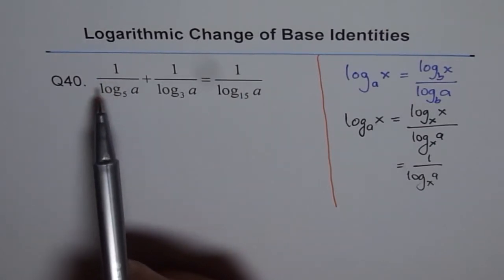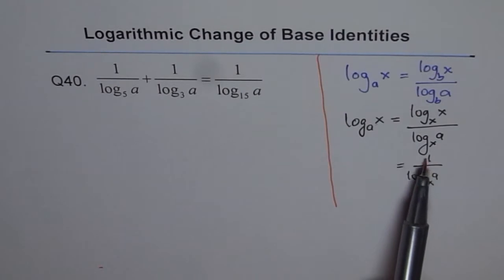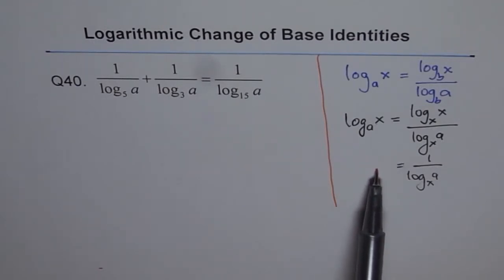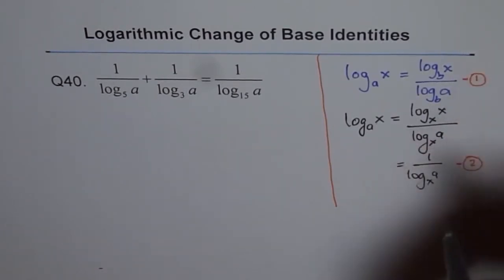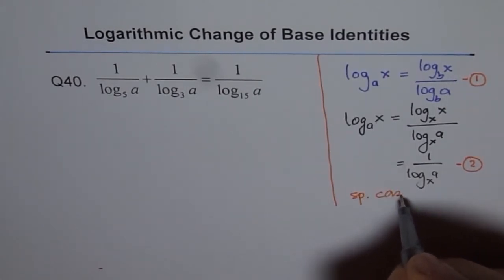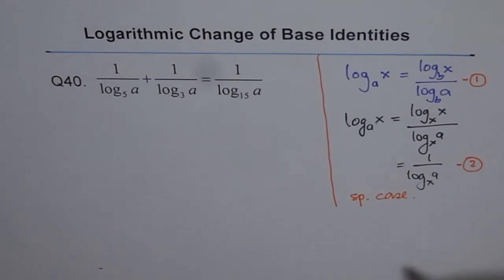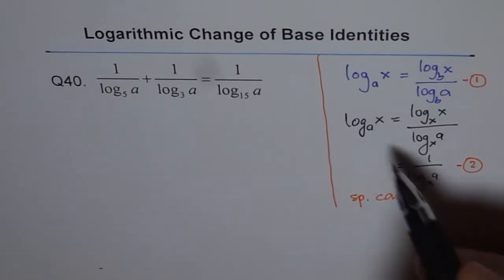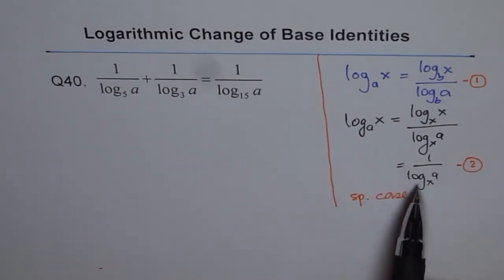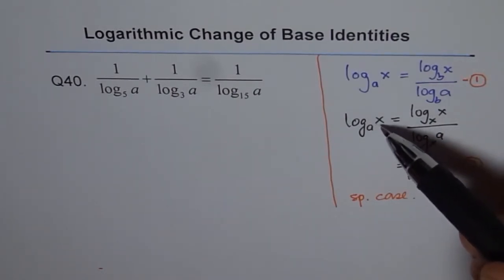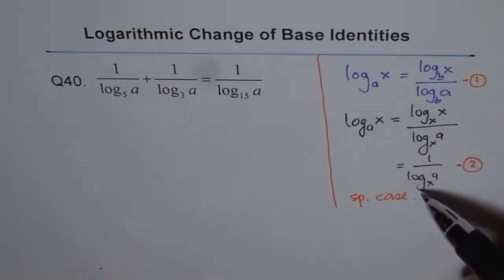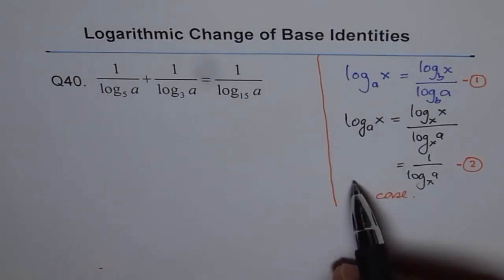Now we have a question with 1 over log_5(a). This could be written as log_a(5). We'll use this identity—let's call this equation 2 and the first one equation 1. This is a special case where the numerator is 1. Using this property derived from change of base, 1 over log_x(a) equals log_a(x).